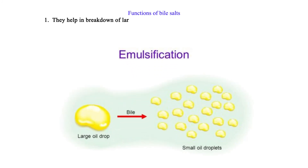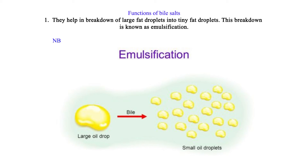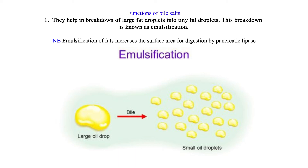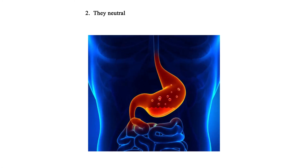Functions of bile salts: 1. They help in the breakdown of large fat droplets into tiny fat droplets. This breakdown is known as emulsification. NB: Emulsification of fats increases the surface area for digestion by pancreatic lipase. 2. They neutralize the acidic chyme from the stomach.